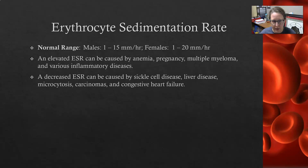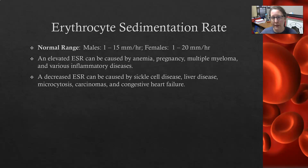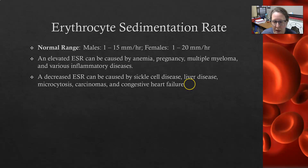A decreased SED rate — basically more like a normal or low-normal SED rate, since it's hard to get less than one millimeter — can be caused by sickle cell disease, liver disease, microcytosis, carcinomas, and congestive heart failure. Those are all conditions that cause the blood to settle less.